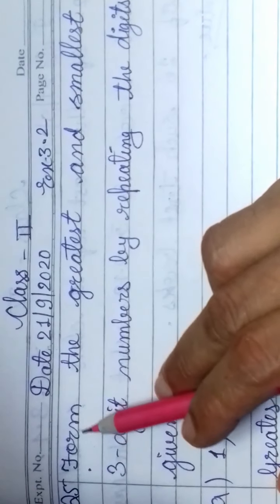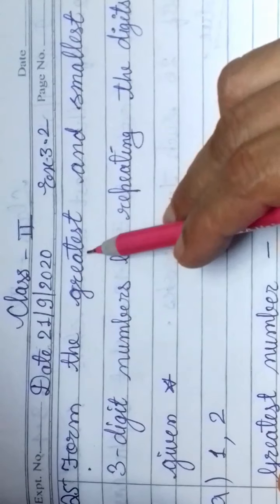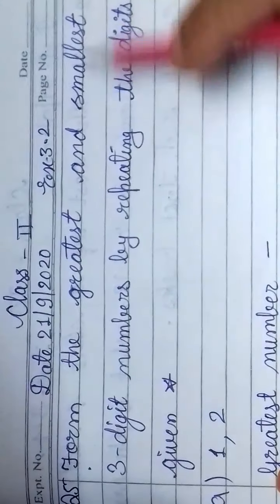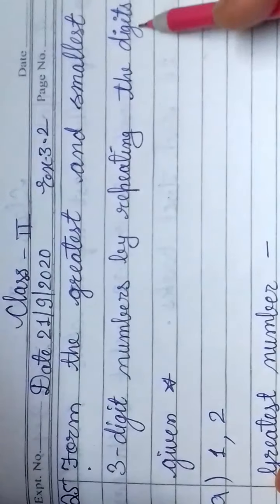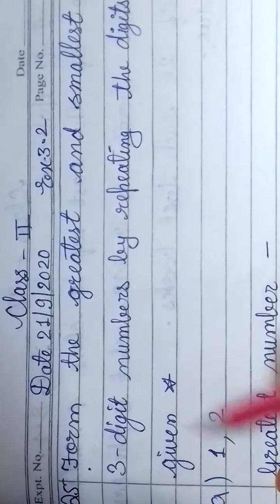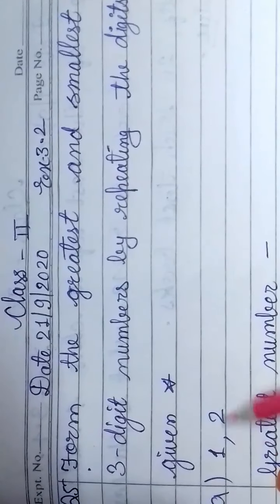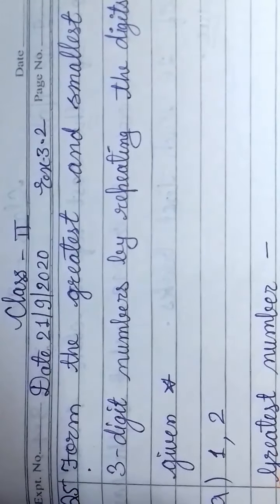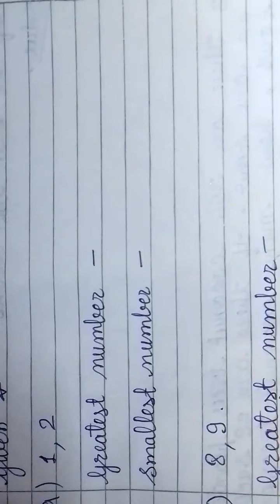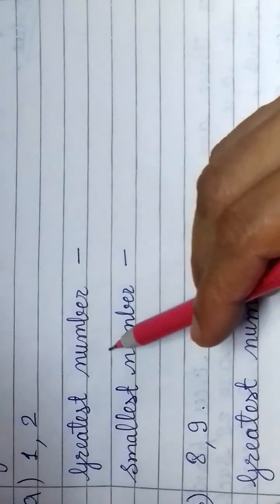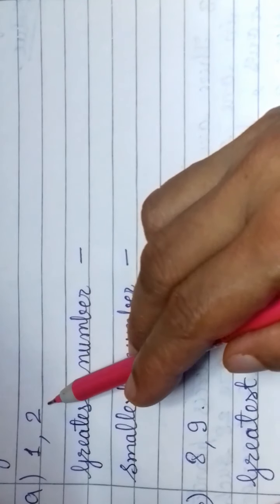The question is form the greatest and smallest 3 digit numbers by repeating the digit given. Here only 2 digits we have. 2 digits are given to us. Then how to make the greatest and smallest number by these 2 digits? 3 digit number we should make.